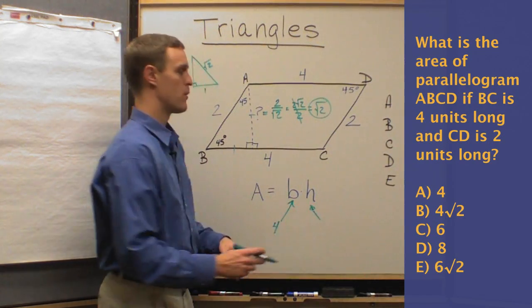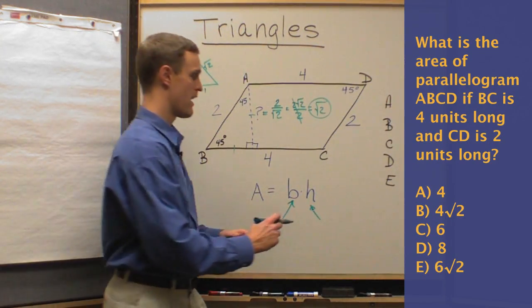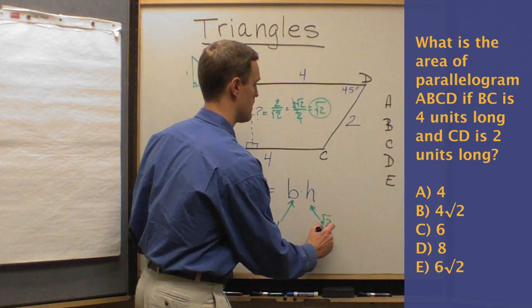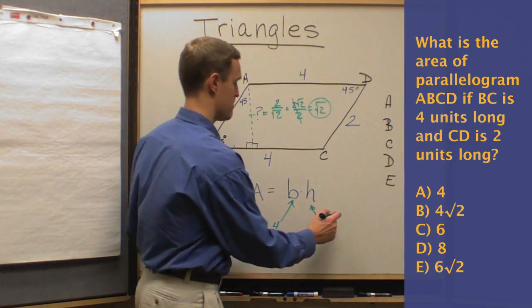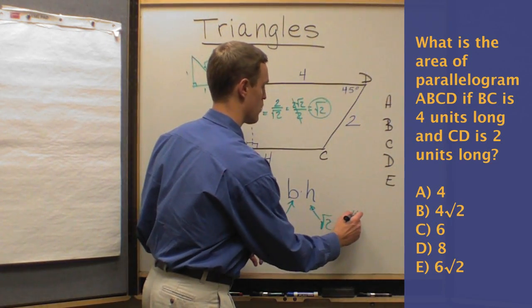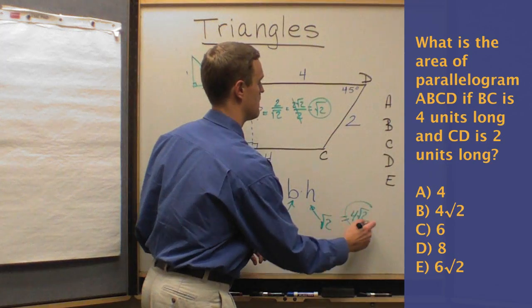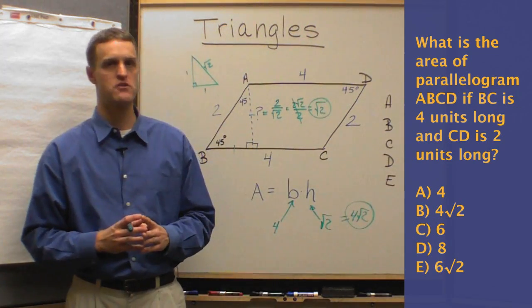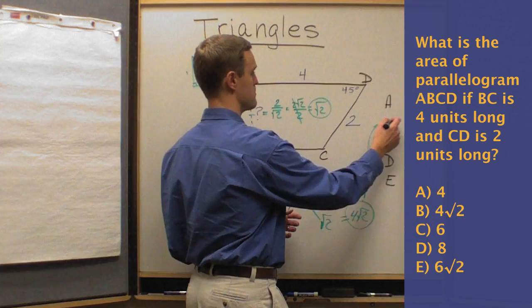When the base is easy, because it's already given to us as plain as day in the problem, it's 4. And now we've done the hard work of solving for the height, which is the square root of 2. And with that, we know that base times height is 4 root 2. And what do we do? We look over the answer choices. Ah, look at that. Answer choice B.